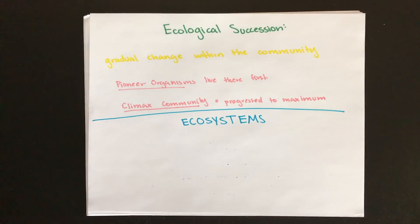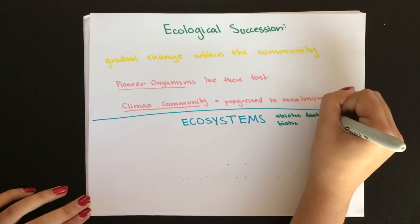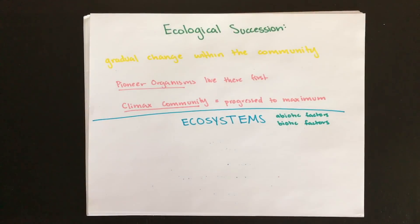Ecosystems include abiotic (non-living) and biotic (living) factors. It's important to be familiar with three cycles before discussing ecosystems — the water cycle, the carbon cycle, and the nitrogen cycle — because these include your abiotic factors.